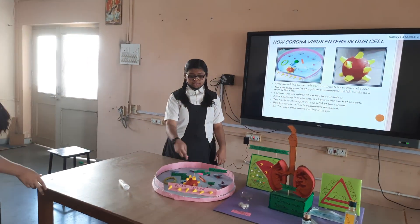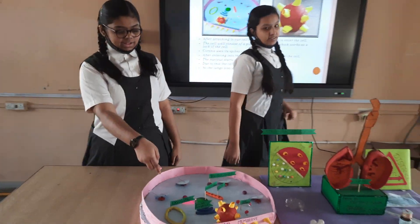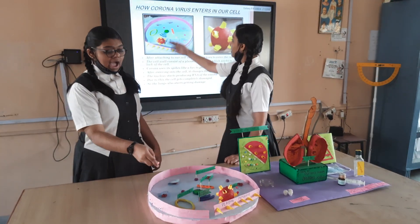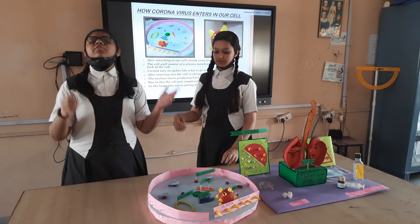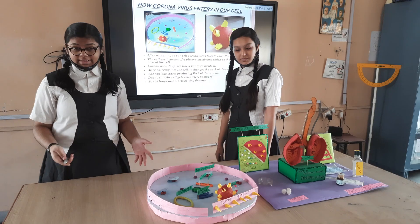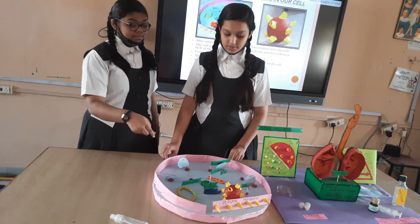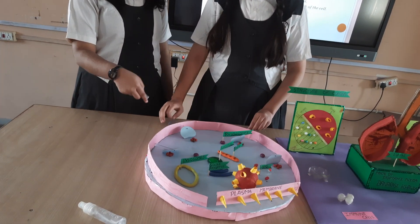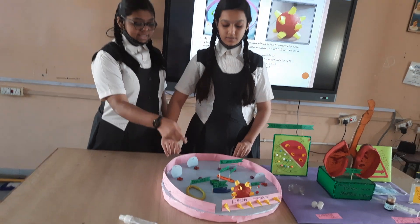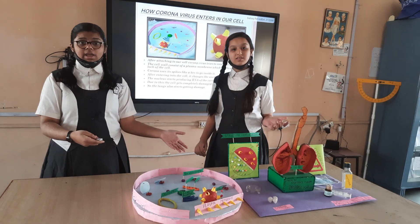Once it goes inside the cell, it takes control over the cell. Then the nucleus, which produces the DNA of the cell, starts producing RNA instead. As we mentioned earlier, the corona's goal is to expand its species. Due to this, the coronavirus spreads completely in the cell and the cell gets completely damaged. Like this, many cells start getting damaged, so the lungs also start getting damaged.